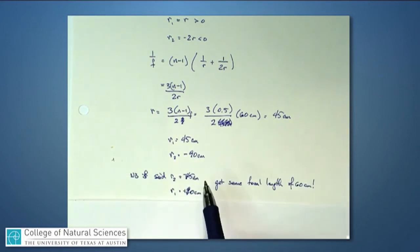On the other hand, just to make you assured that it didn't matter what orientation this lens is, if I had said r2 is minus 45 centimeters and r1 is plus 90, in other words, I take the lens and I flip it around, I'll still get the same focal length of 60 centimeters.